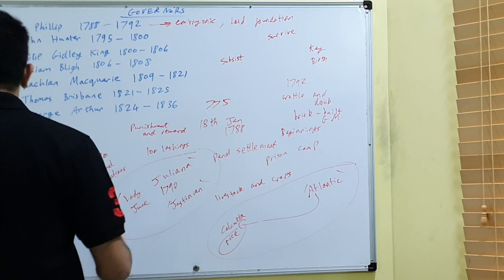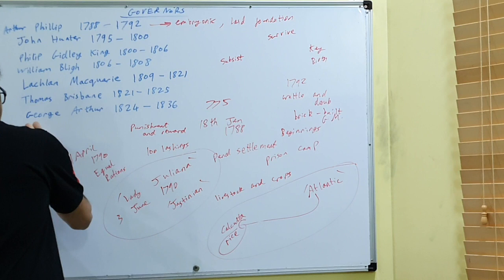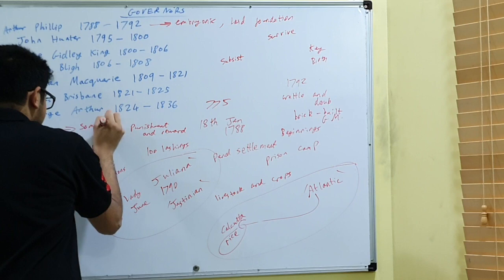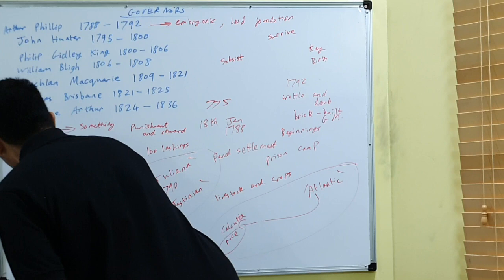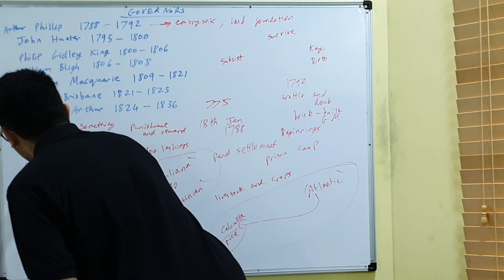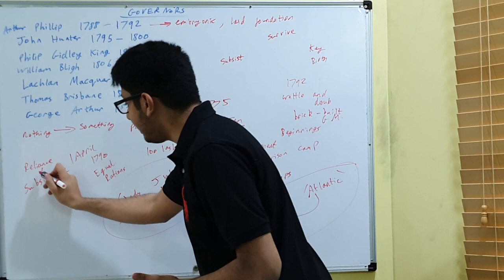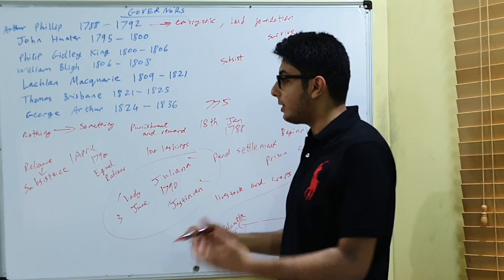What Phillip was able to do, you see, was turn nothing into something. He created the beginnings of a penal colony which went from reliance on government supplies and imports to being able to subsist from its own agricultural produce.